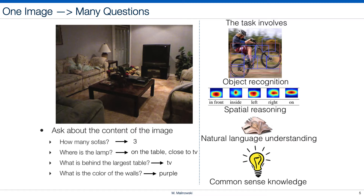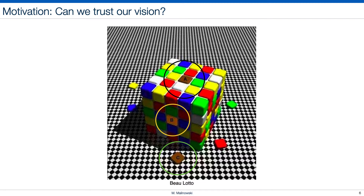Therefore, I believe it is much more realistic and interesting to ask not one question about the image, but to ask multiple questions about the content of this image. This generalizes the single image, single question classification task and also requires a more holistic approach that involves object detection and some spatial reasoning. And since there is language involved, we also expect some kind of natural language understanding. Finally, for such a holistic system, we would also need common-sense capabilities. In fact, there are a few recent datasets that represent common-sense reasoning in the form of visual question answering.